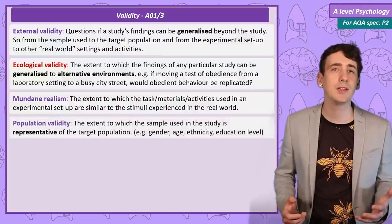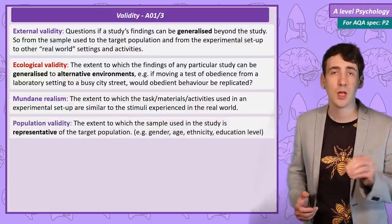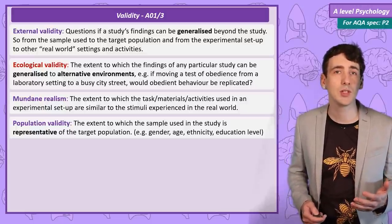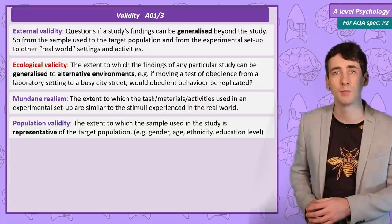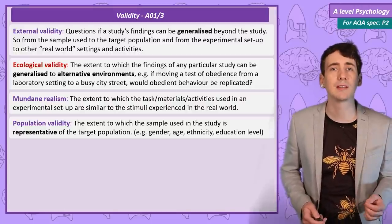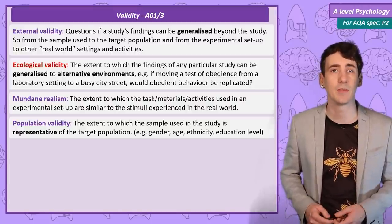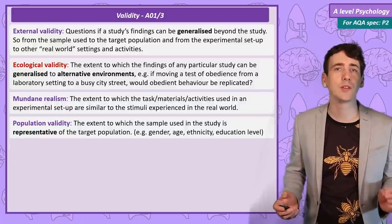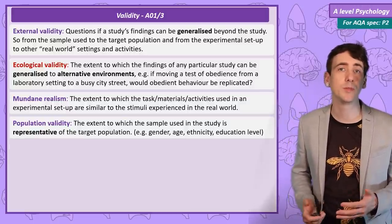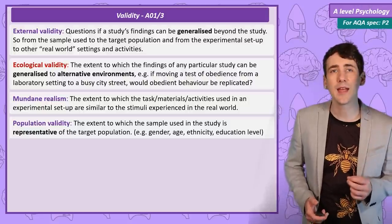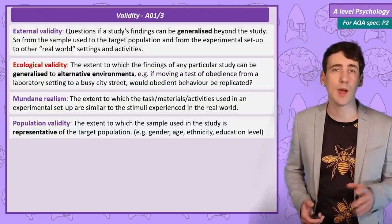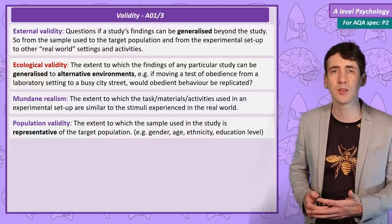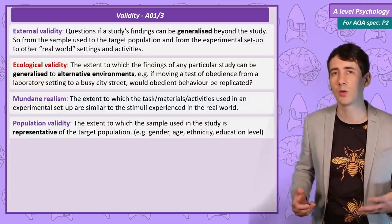We consider population validity when we generalise our findings from our sample to the broader population, and this can be problematic if the population is not represented in the sample. This type of validity often has links to gender and culture bias and is a big problem in psychological research. Many older studies excluded women from their samples, assuming the results would be the same. And even today, most studies are conducted on young westerners, often psychology students, and then published claiming to show evidence of typical human behaviour.